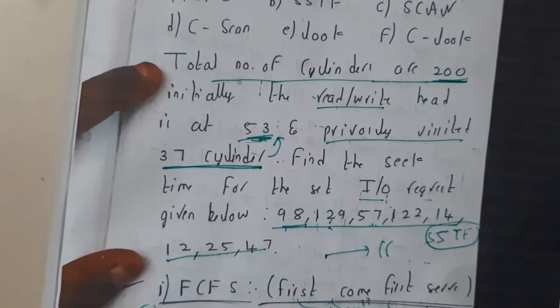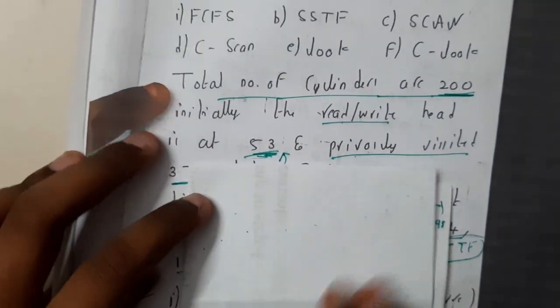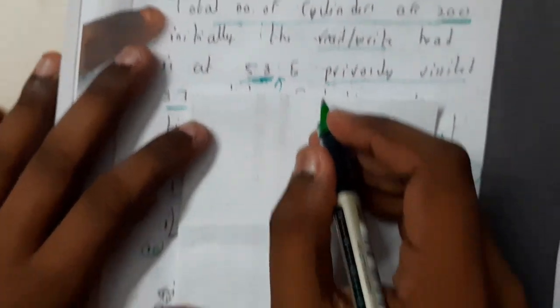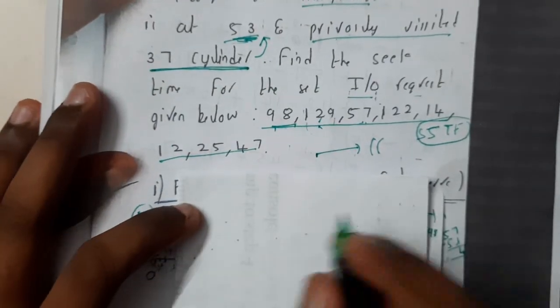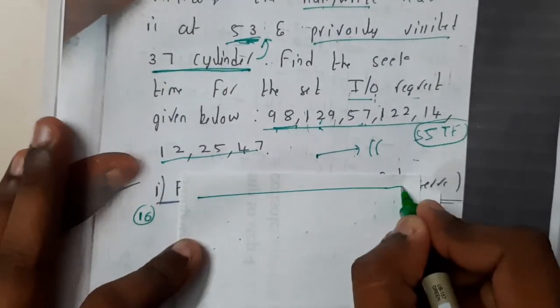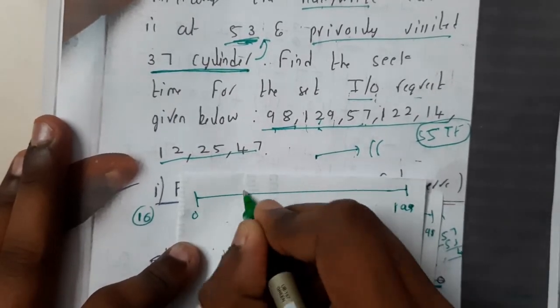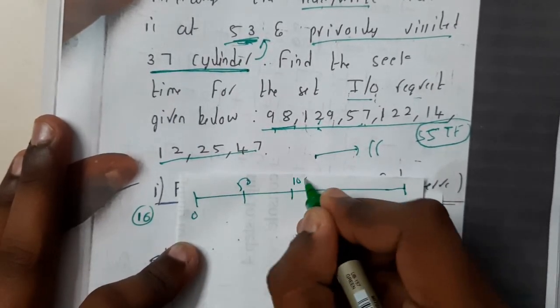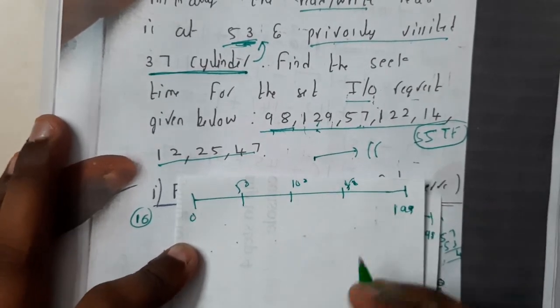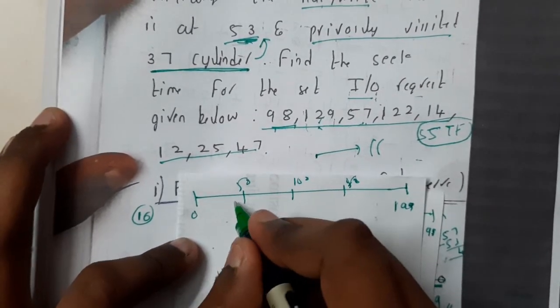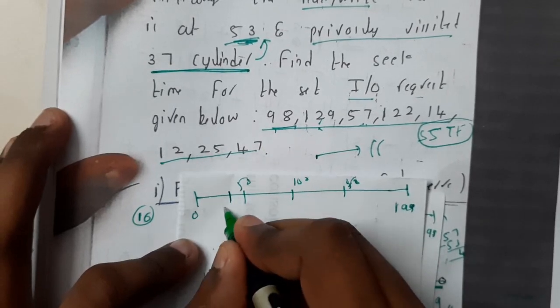Let's do the algorithm with the example we've been doing from the past three videos. This is our third video on the same topic. C-SCAN is nothing but after reaching 199, you will be starting. Initially, we will be drawing 0 to 199, marking 50, 100, 150. We marked the three spots. Initially, he visited 37, after that he visited 53.